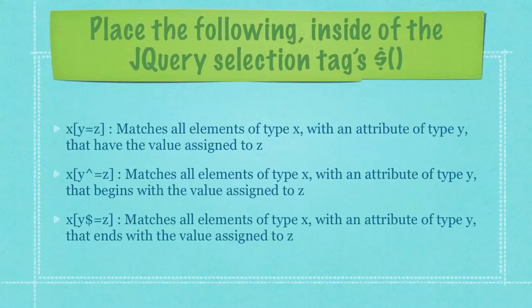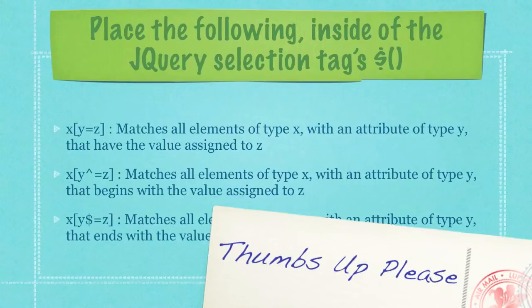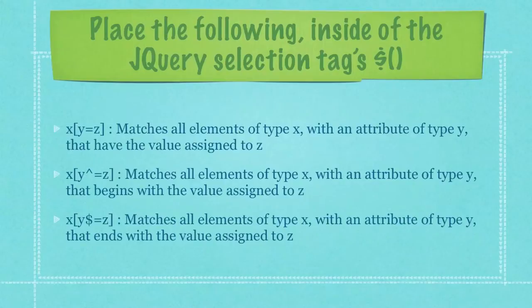This will match all elements of type X with an attribute of type Y. The second bulleted will match all elements of type X with an attribute of type Y that begins with the value assigned to Z. And finally, this code will match all elements of type X with an attribute of type Y that ends with the value assigned to Z.